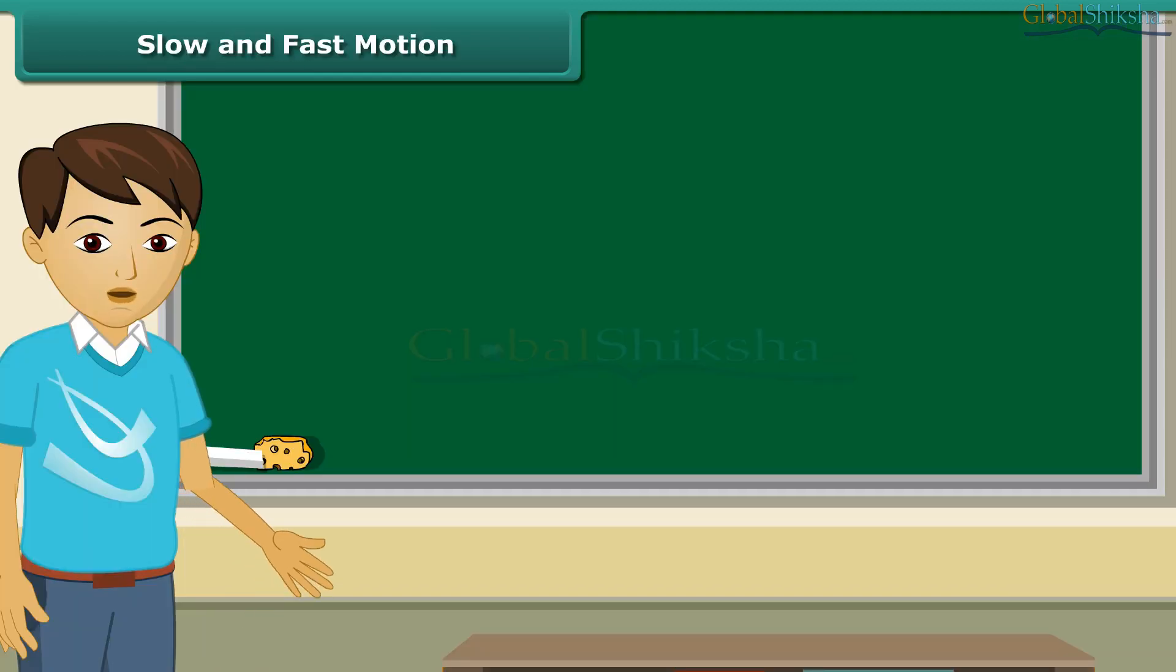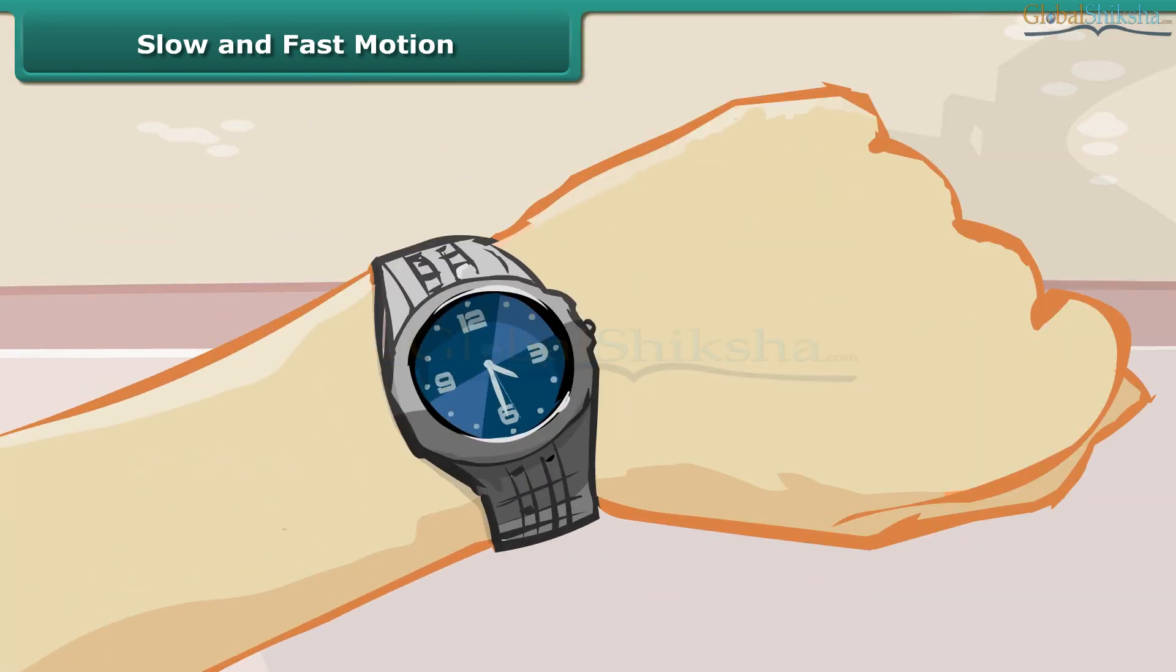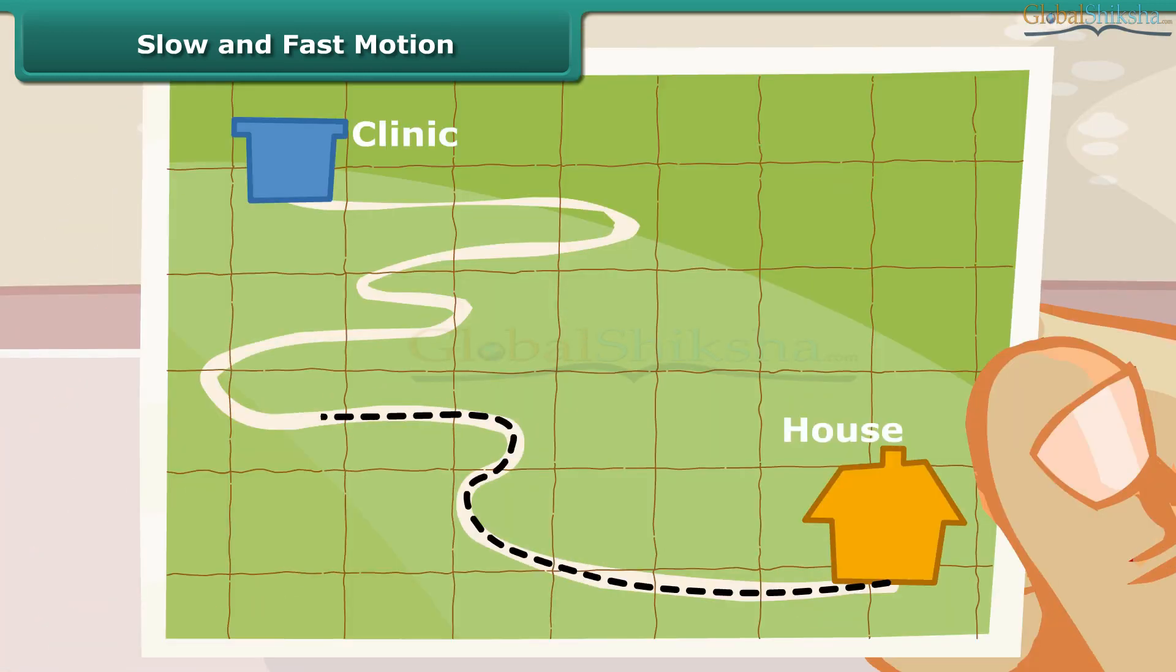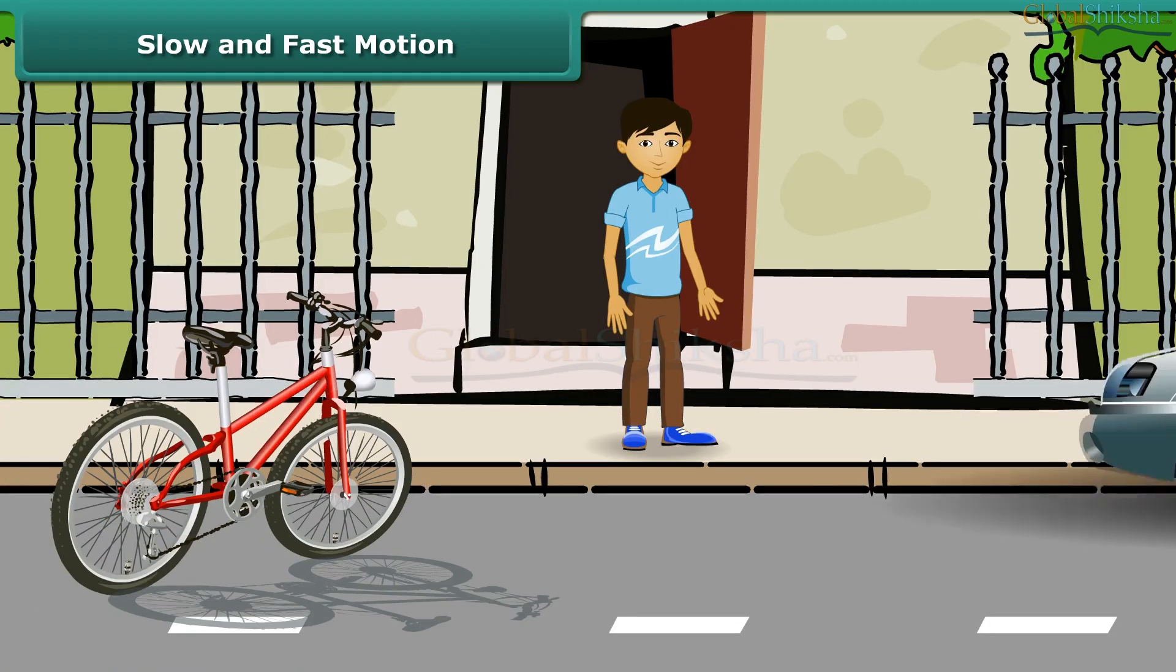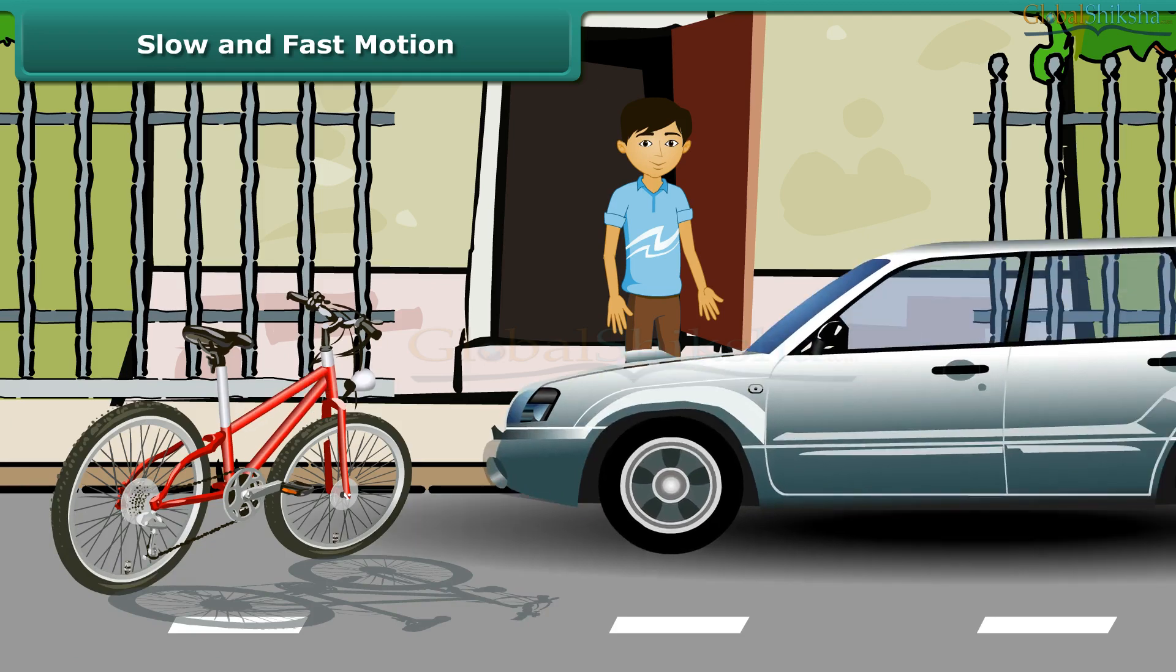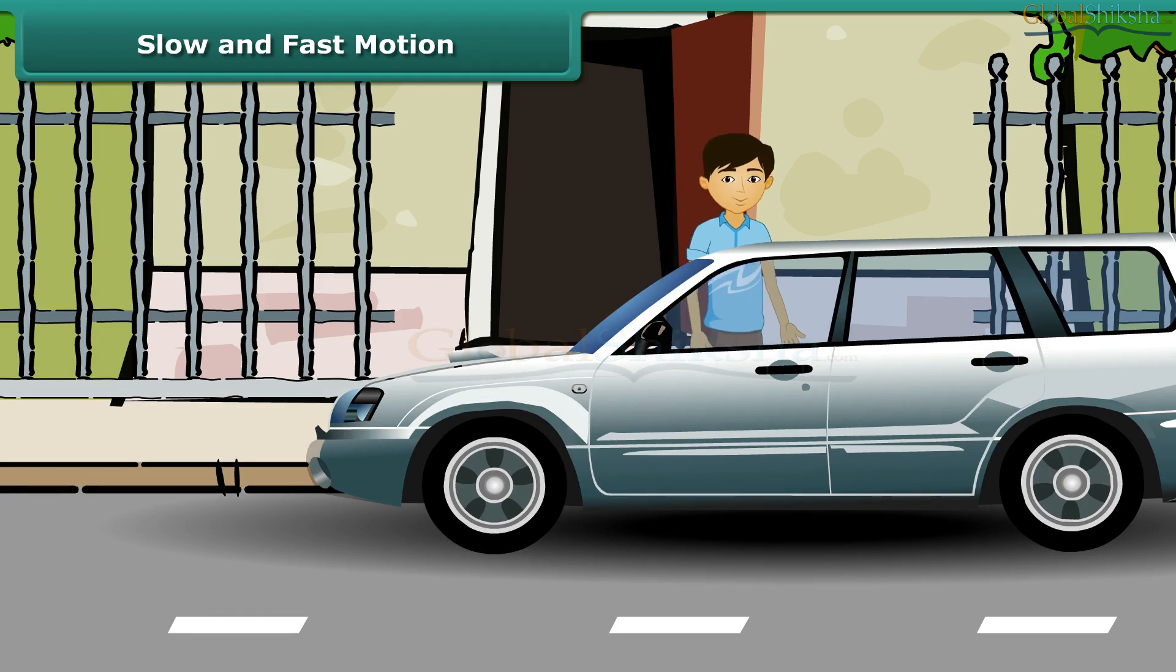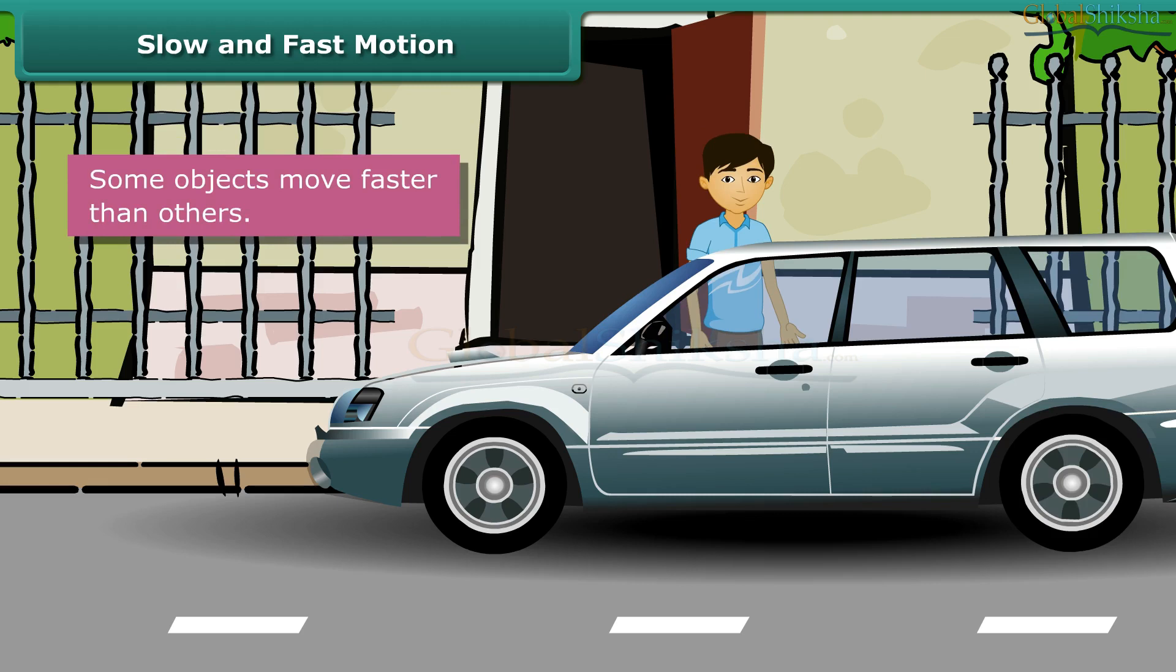Suppose you have an appointment with your doctor at 5 in the evening. It is already 4:30 pm and the doctor's clinic is 5 km away from your house. You have the choice of either cycling down or taking a taxi to the clinic. What will you do? Correct. You will take a taxi because a taxi is faster than a cycle. So, we can say that some objects move faster than others.